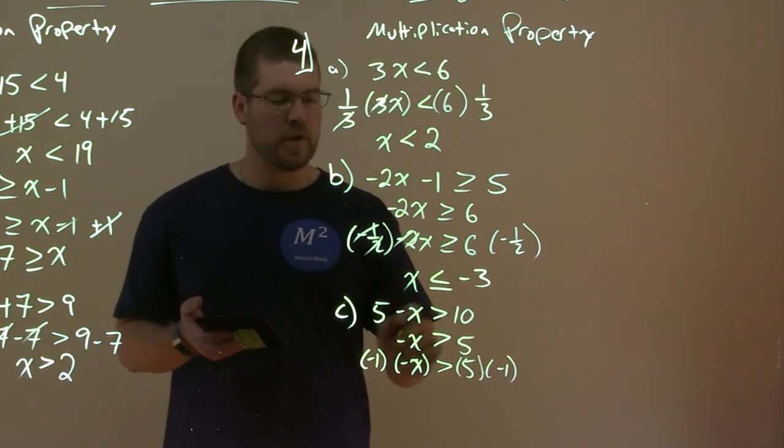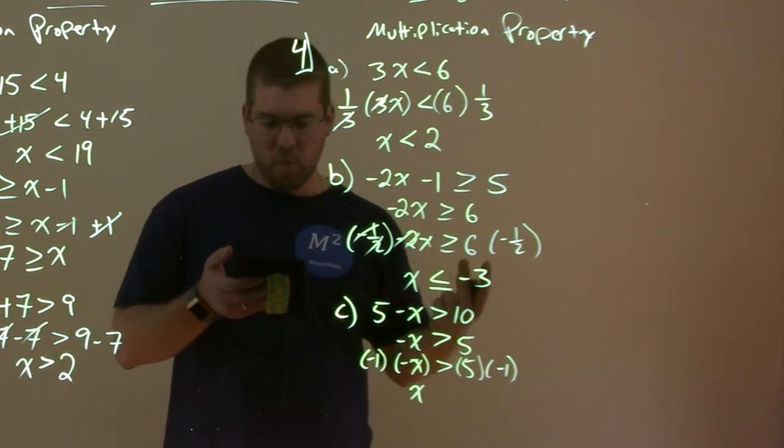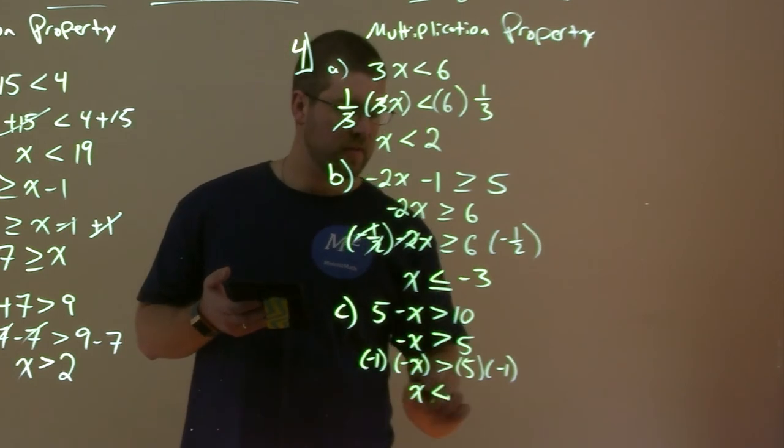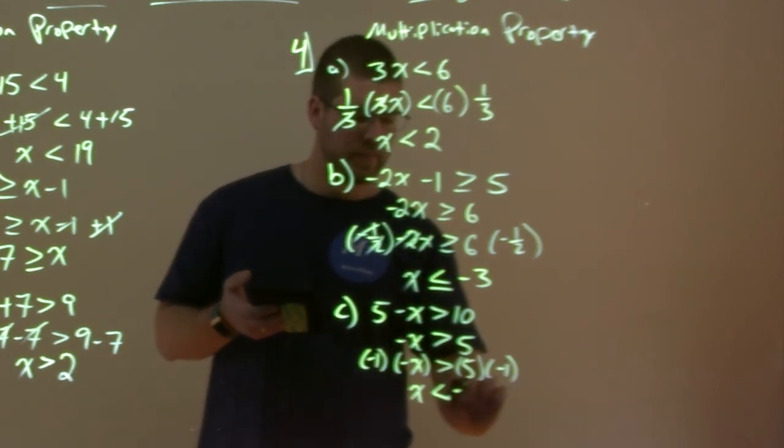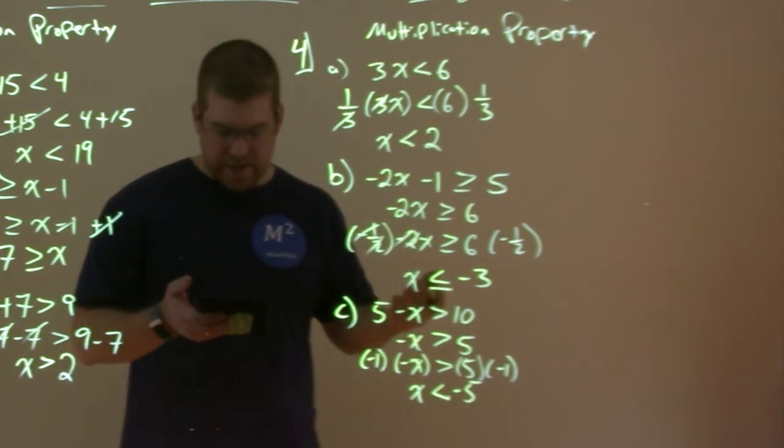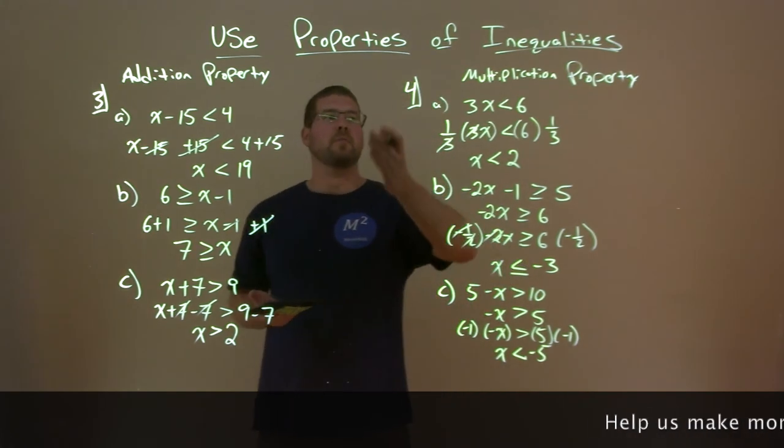Negative 1 times negative X is a positive X. We again flip the sign. So greater than is now a less than sign. And 5 times negative 1 is negative 5. And there you have it. You've done some examples of using properties of inequalities, the addition and multiplication property of inequalities.